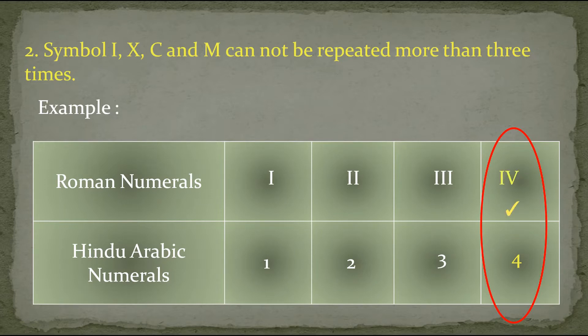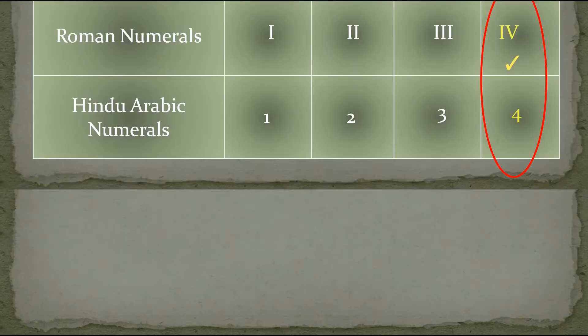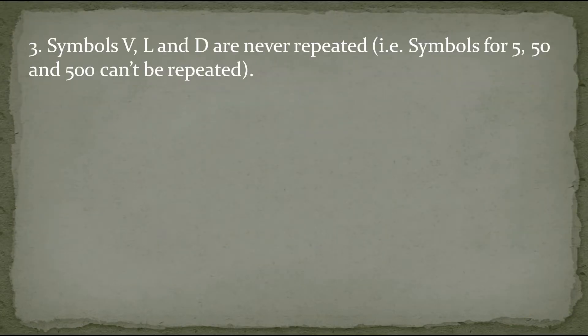Now let's understand the third rule. The third rule says that symbols V, L and D are never repeated. That is, symbols for 5, 50 and 500 cannot be repeated.